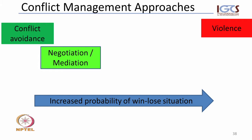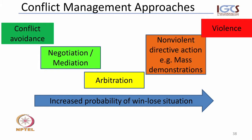In between we have approaches and steps to deal with the conflict. We can use negotiation techniques, we can use mediation, we could move up to arbitration, and we could end up — when all of those have failed — with non-violent direct action such as mass demonstrations, which still could lead to a de-escalation. If nothing is handled with care, we will end up with a violent situation.